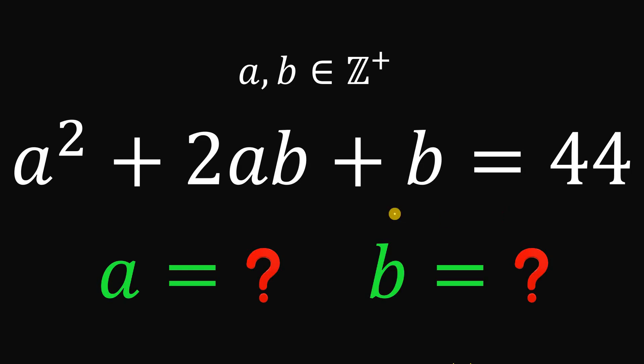Can you solve this math challenge? Here's the question. Given this equation, a squared plus 2ab plus b equals 44, the goal is to find the values of a and b that satisfy this equation, wherein a and b are both positive integers.